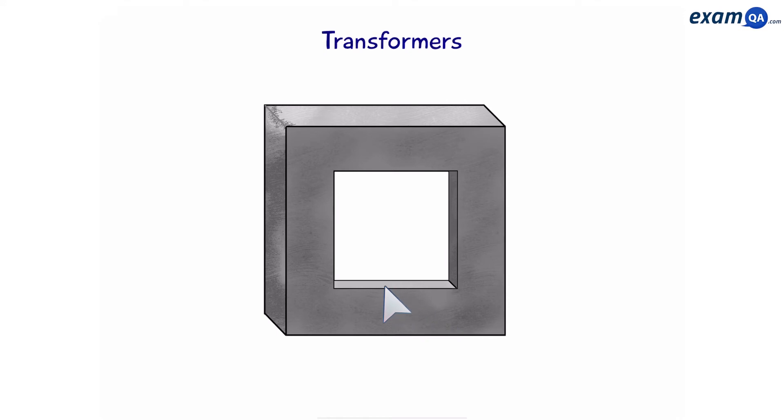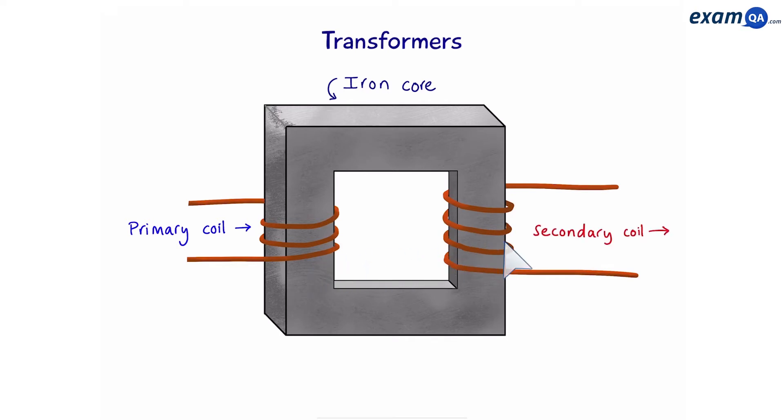So what is a transformer? It's basically an iron core which has two coils wrapped around it. A primary coil that brings electricity in and a secondary coil that takes electricity away once the voltage has been changed.